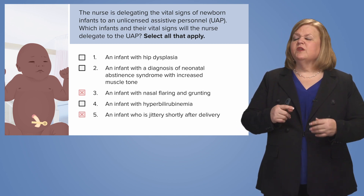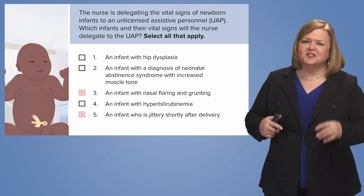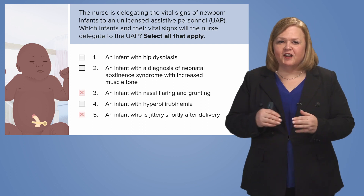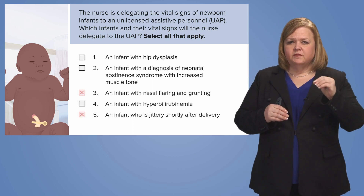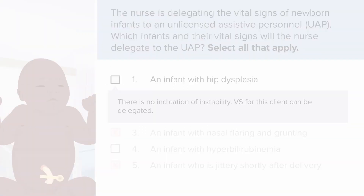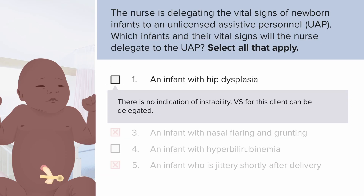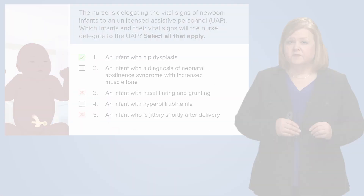We've eliminated number three and five. Starting back at the top: number one — an infant with hip dysplasia. Are they unstable? Hip dysplasia is a bone issue. There are no signs that they're hemodynamically or respiratorily unstable. So yes, a UAP can do that. Number one, you're in.